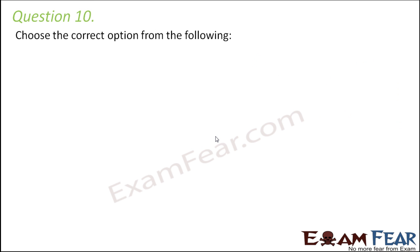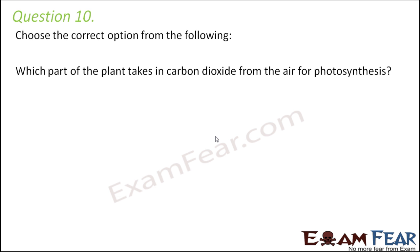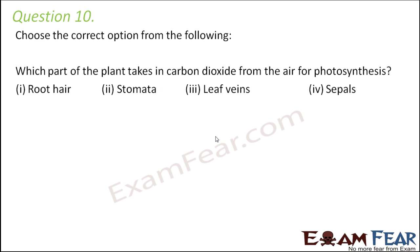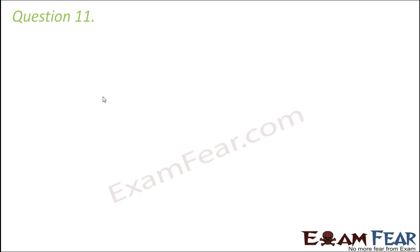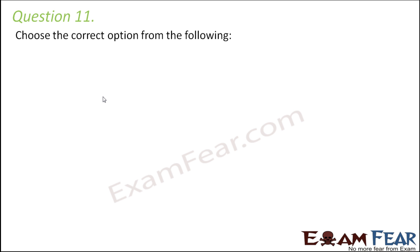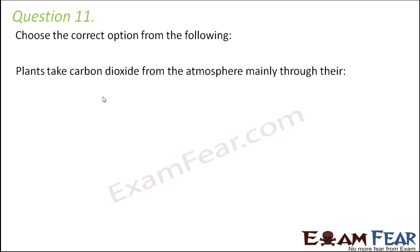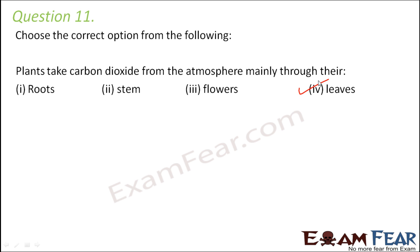Question number 10. Choose the correct option. Which part of the plant takes in carbon dioxide from the air for photosynthesis? Root hair, stomata, leaf vents, or sapeles. Gaseous exchange is done entirely by stomata — they are tiny pores on the leaves. Plants take carbon dioxide from the atmosphere mainly through their roots, stem, flowers, or leaves. Of course it is the leaves, because leaves have the stomata and through stomata they take in carbon dioxide.